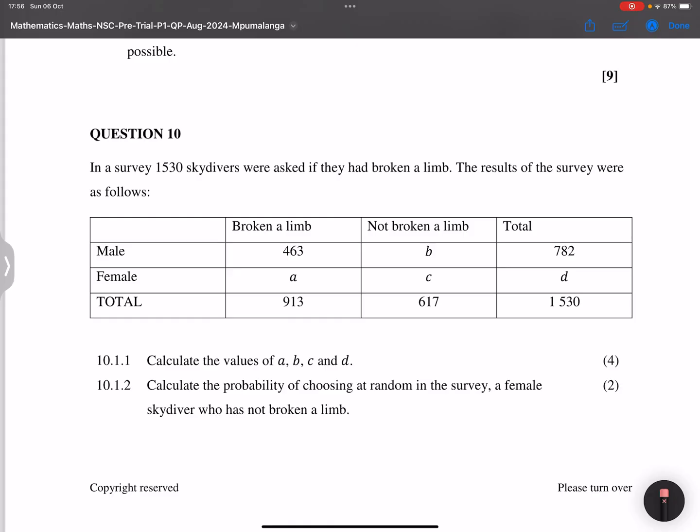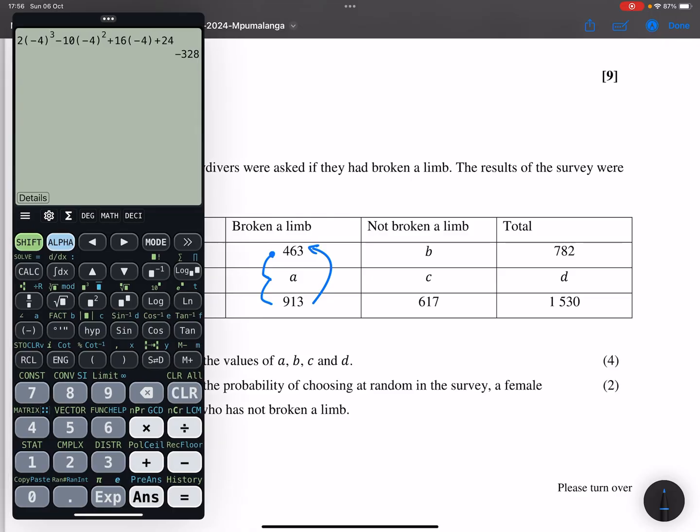Now, quite easy to do this because it means 463 plus A should give us 913. So we can just subtract these two from each other. So A would be 913 minus 463. So that means that A is 450.